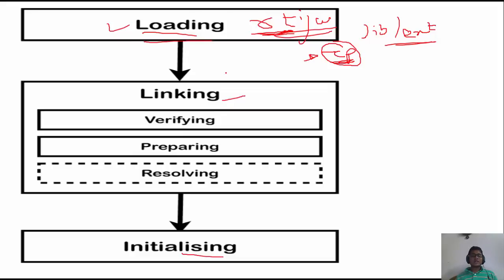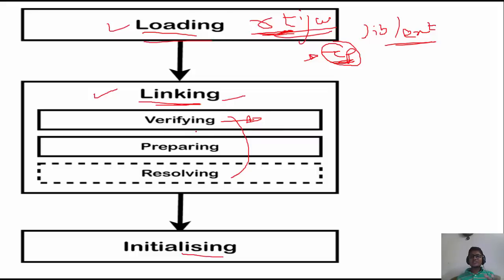The loading phase is now complete. The second important phase is linking, which is where most of the work is done. Linking involves three sub-processes: verifying, preparing, and resolving. The verify phase checks whether your Java bytecode is compatible with the JVM specification. If there is a problem during verification, it will throw a ClassNotFoundException.